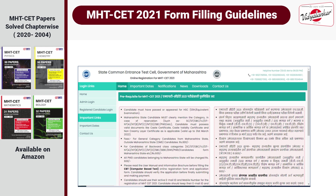Examination fees for open category students is Rs. 800 and for reserved category students it is Rs. 600. You are required to use your active email ID and mobile number for registration, because all further communication will take place on the email ID and mobile number you provide.